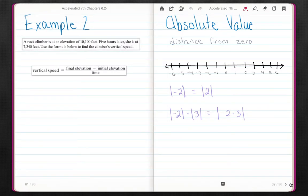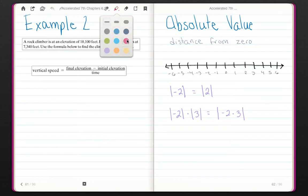So, example 2. A rock climber is at an elevation of 10,100 feet. Five hours later, she's at 7,340 feet. Use the formula below to find the climber's vertical speed. So let's highlight some of these here so that we know what we have. So she's at 10,100 feet. That is your initial elevation. Five hours later, there's your time. That's how much time she was climbing. She's at 7,340 feet. That is her final elevation.